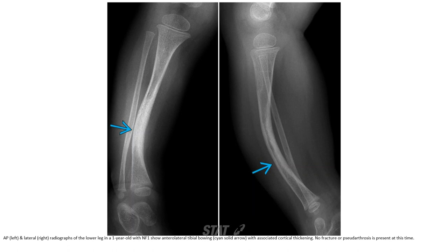This is the AP and lateral radiograph of the lower leg in a one-year-old with NF1, showing antero-lateral tibial bowing with associated cortical thickening. No fracture or pseudoarthrosis is present at this time.